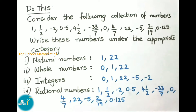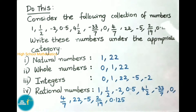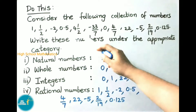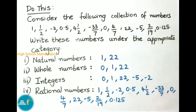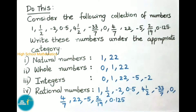We can better understand rational numbers by seeing these examples. Consider the following collection of numbers: 1, 1/2, -2, 0.5, 4, 1½, -33/7, 0, 4/7, 22, -5, 2/19, 0.125. We have to write all these numbers under the appropriate category.